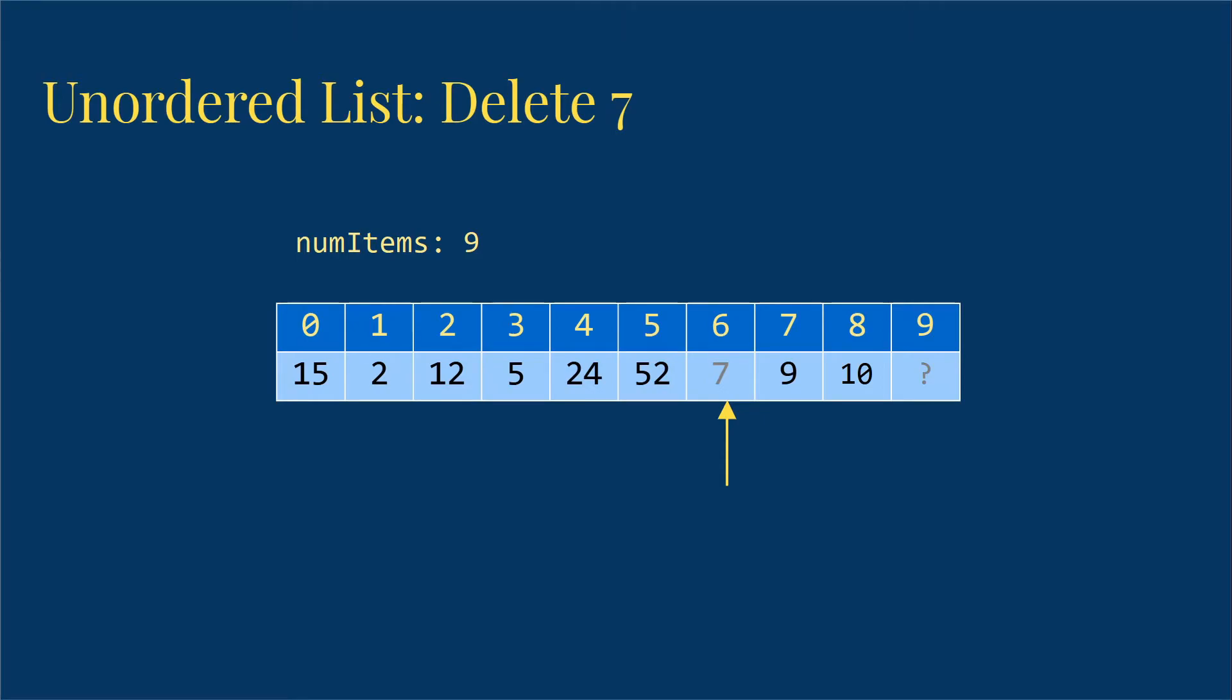Plus, I really want all my items together with no holes. After I delete, I'll have 8 items. I really want them to be in indices 0 through 7 again. What I need to do is to shift the items that come after the 7 over so that my list of items is all together.